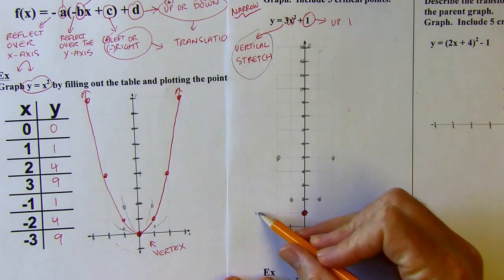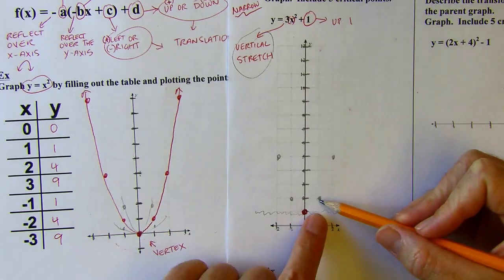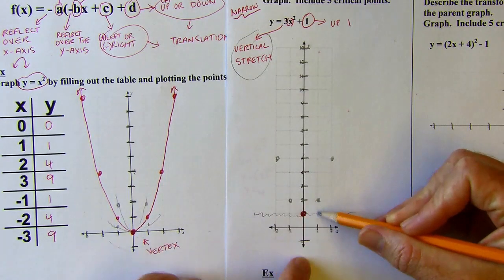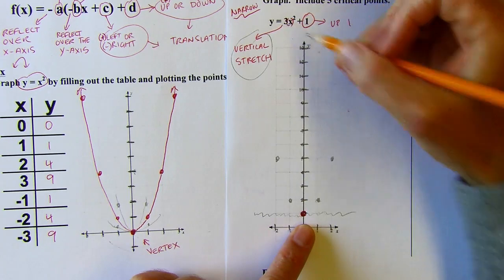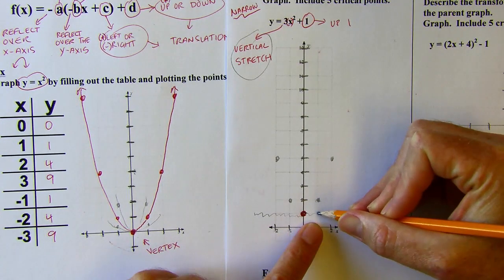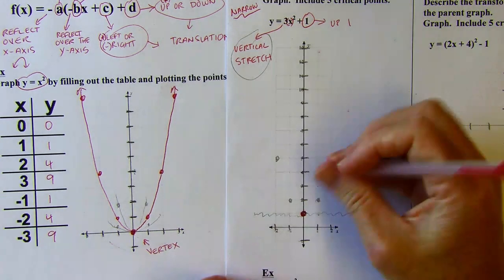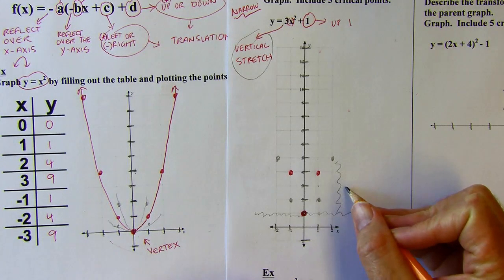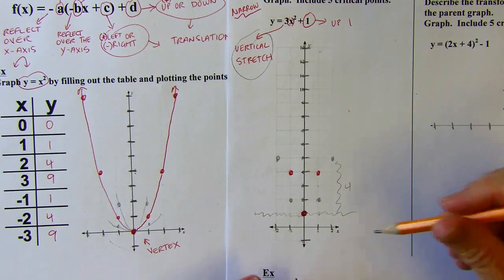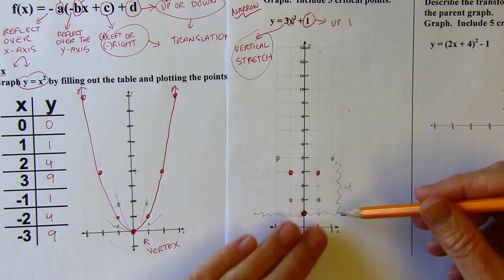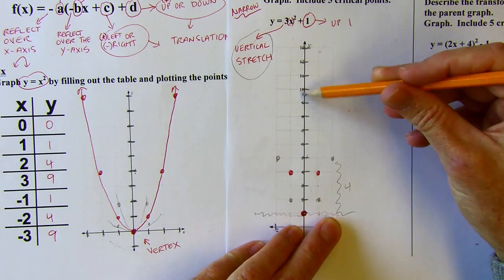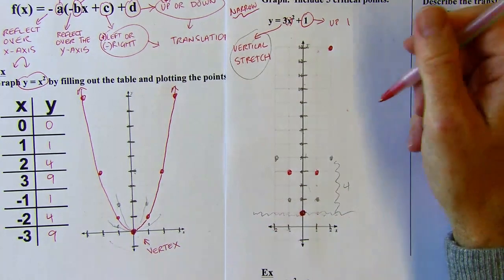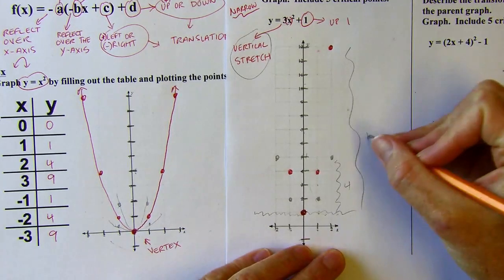Now I apply the vertical stretch. Thinking of the vertex as the floor, the first set of ghost points is one unit above the floor — I want to triple that to three units. The second set is four units above the floor — tripling gives 12 units above. So those outer points go all the way to the top of the graph, 12 units above the floor.